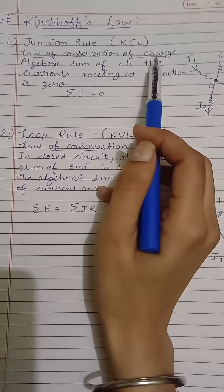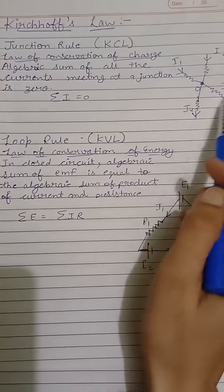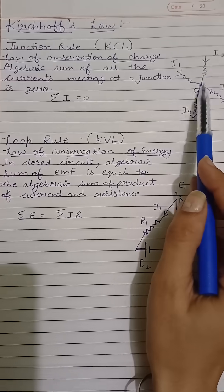This is the law of conservation of charge. According to this law, the algebraic sum of all the currents meeting at a point is zero.